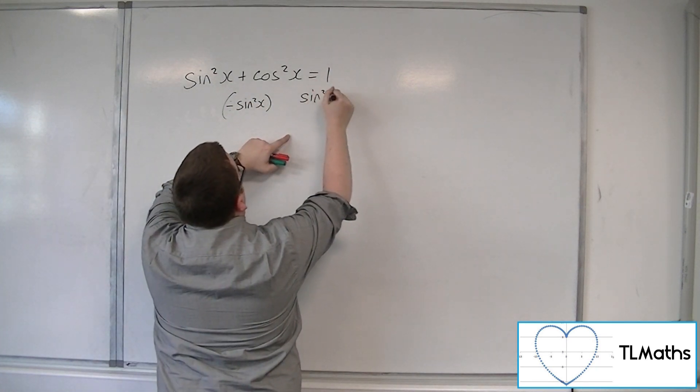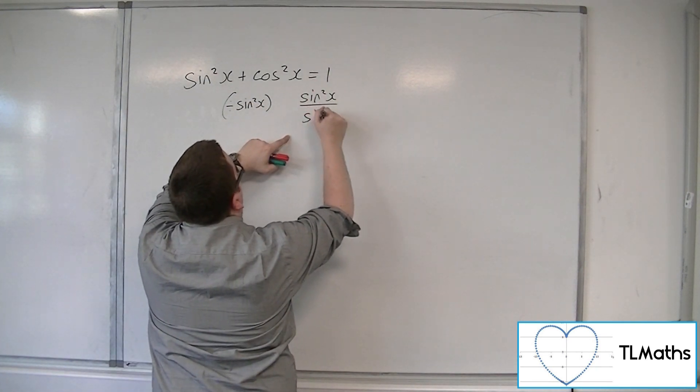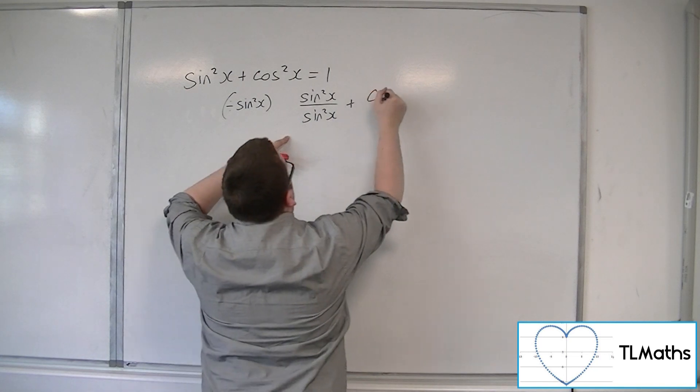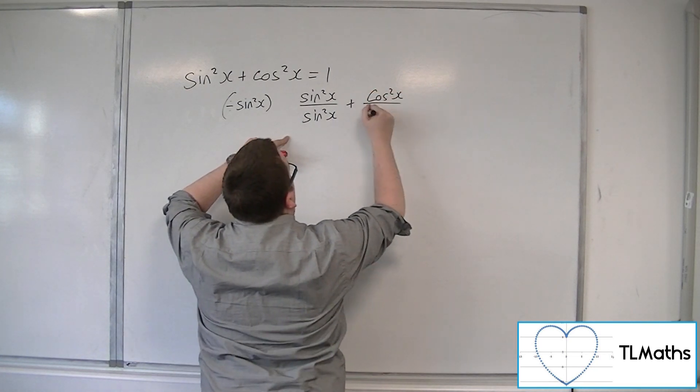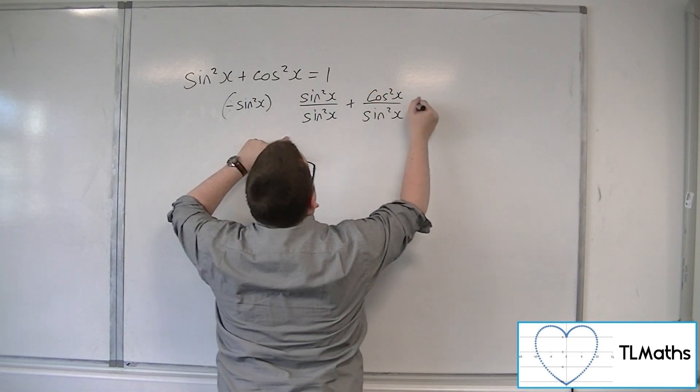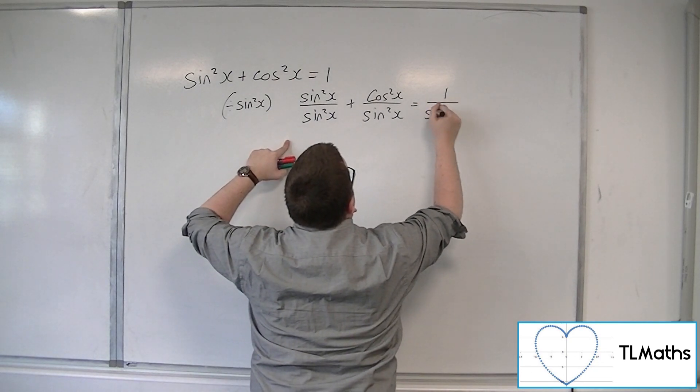So, we're going to get sine squared x over sine squared x plus cos squared x over sine squared x is equal to 1 over sine squared x.